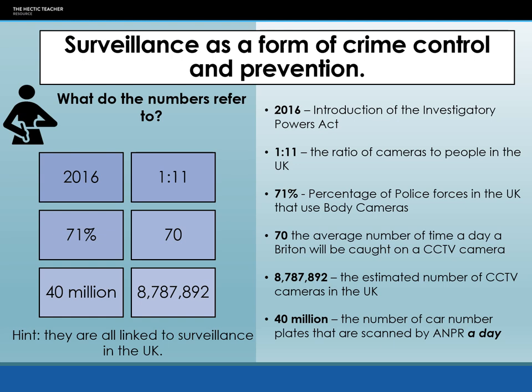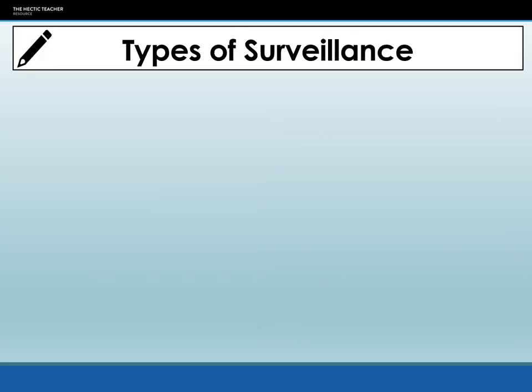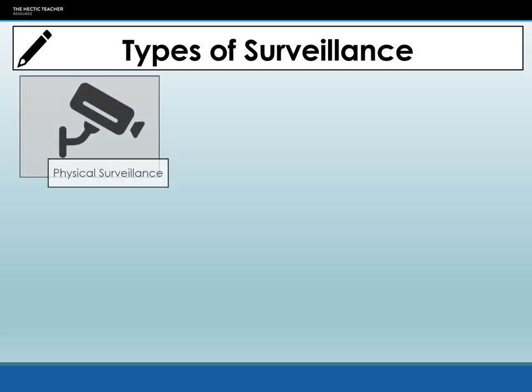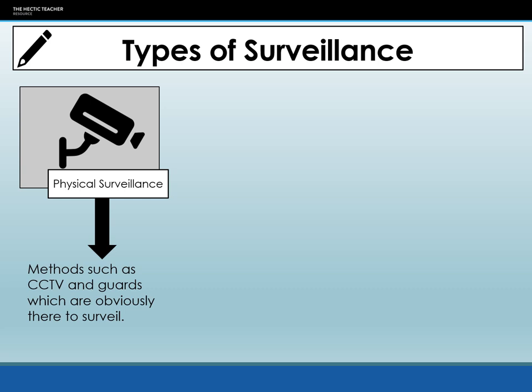There are different types of surveillance. The first one is physical surveillance — these are the CCTV cameras, the guards, the police, the military, the actual physical watching of other people. They are a lot more obvious that they're there to surveil us. So physical surveillance is quite obvious when it's happening.